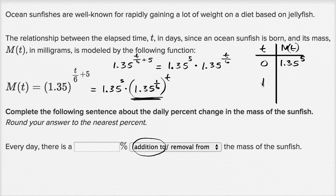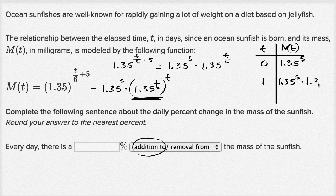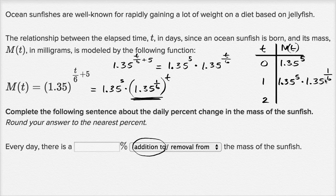And then when t is equal to one, it's going to be our initial mass, 1.35 to the fifth power, times our common ratio, times 1.35 to the one sixth power. When t equals two, we're just going to multiply what we had at t equals one, and we're just going to multiply that times 1.35 to the one sixth again.